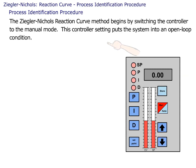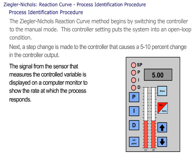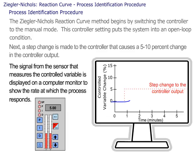The Ziegler-Nichols Reaction Curve method begins by switching the controller to the manual mode. This controller setting puts the system into an open-loop condition. Next, a step change is made to the controller that causes a 5 to 10 percent change in the controller output. The signal from the sensor that measures the controlled variable is displayed on a computer monitor to show the rate at which the process responds.